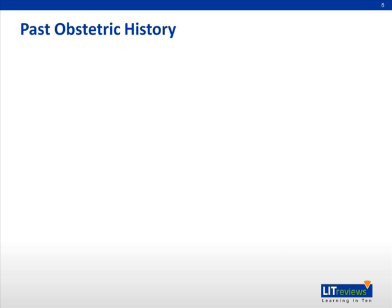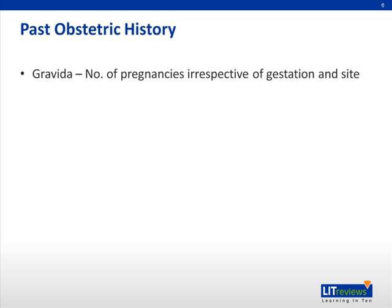Now let's look at the past obstetric history and the obstetric code. There are a few terminologies peculiar to obstetrics. Gravida means the number of pregnancies, irrespective of gestation and site. Please do not use the term gravida when a person is not pregnant. For example, a person presenting with a gynecological problem who has had two children in the past would just be para 2. But a person who is currently pregnant and has had two children in the past would be mentioned as gravida 3 para 2.